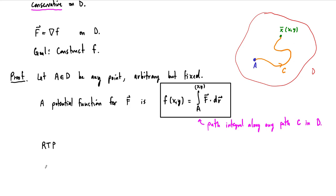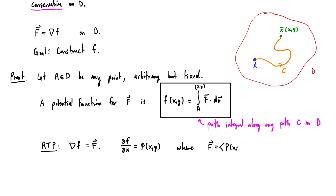Sometimes in math we write RTP — remains to prove. What we want to show is that the gradient of f equals big F. I'm going to provide an argument that shows that the partial derivative in the x direction equals the x component of our vector field, which I'll call P(xy). Our vector field F is represented in this two-dimensional domain by P(xy), Q(xy). Once we've done the x partial derivative, the rest should be clear as to how you proceed.